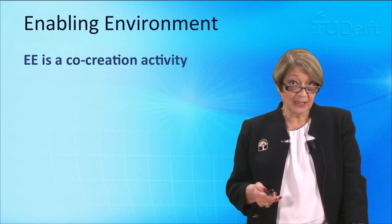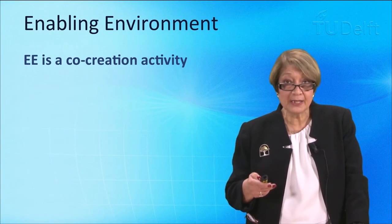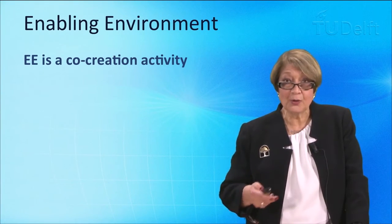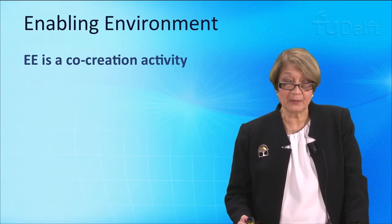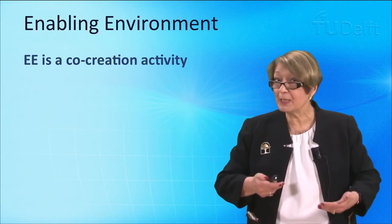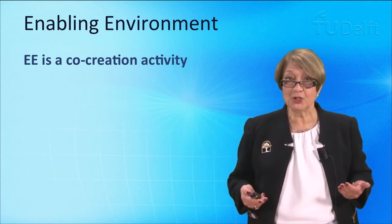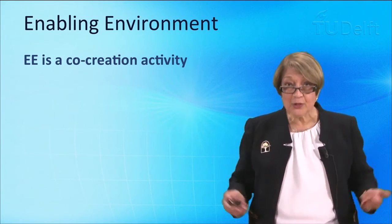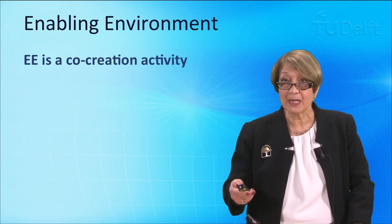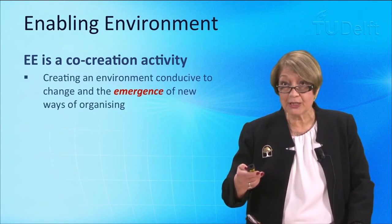So what is an enabling environment? An enabling environment is set up as a co-creation activity. A CEO or head of an organisation cannot say as of tomorrow I will set up the enabling environment. What that leader does is actually start the process, but by himself or herself they cannot actually create it. This is a co-creation activity. It takes everyone else involved in that social ecosystem to actually co-create the enabling environment. It needs that distributed intelligence to actually do it.